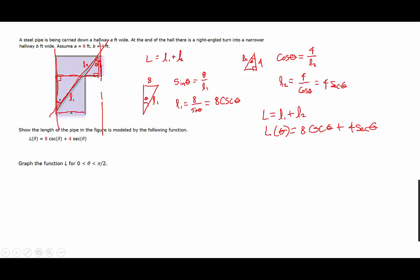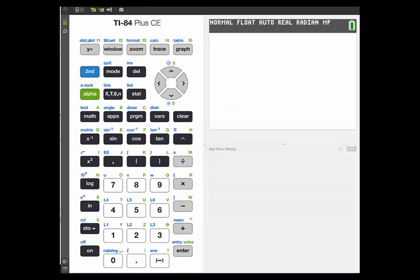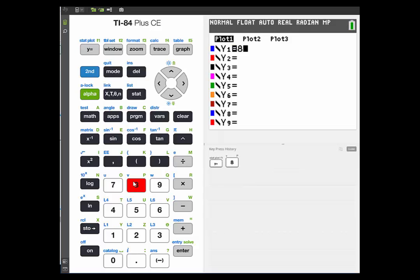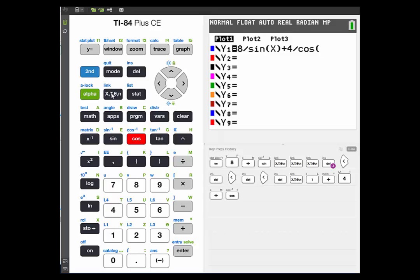Now let's graph the function L for theta between 0 and pi over 2. We could graph this function by pressing y equals and then entering the function. Since we don't have the secant and cosecant functions, we will use the sine and cosine functions. So we would have 8 divided by the sine of x plus 4 divided by the cosine of x. Then we can click graph.